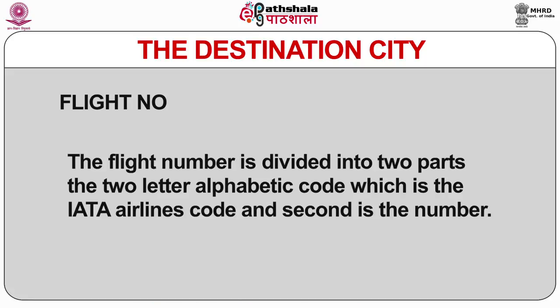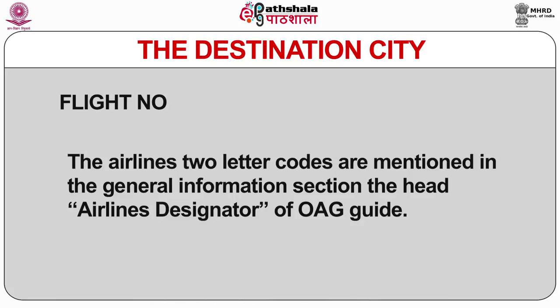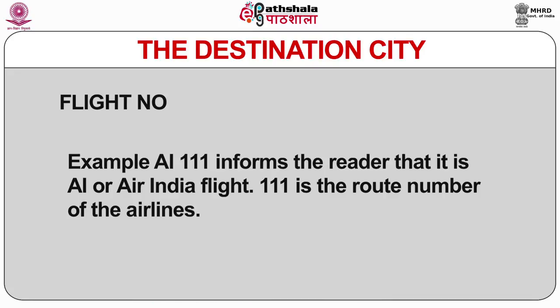The Flight Number is divided into two parts: the two-letter IATA airline code and the flight number. The airline's two-letter codes are listed in the general information section under 'Airlines Designator.' For example, AI 111 means it is an Air India flight, and 111 is the route number.